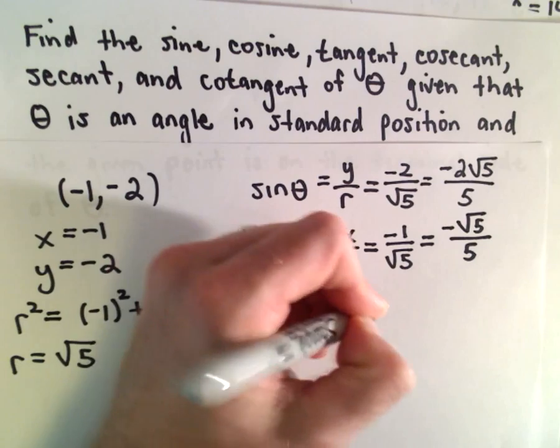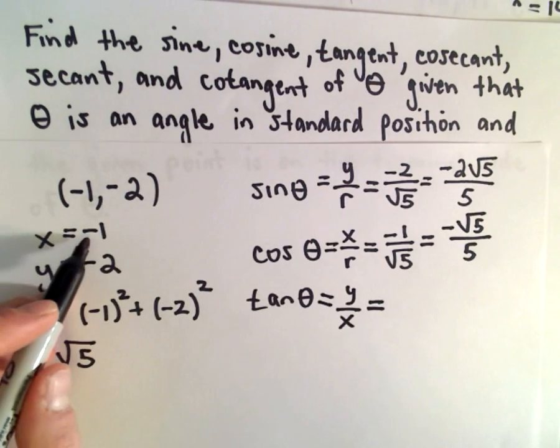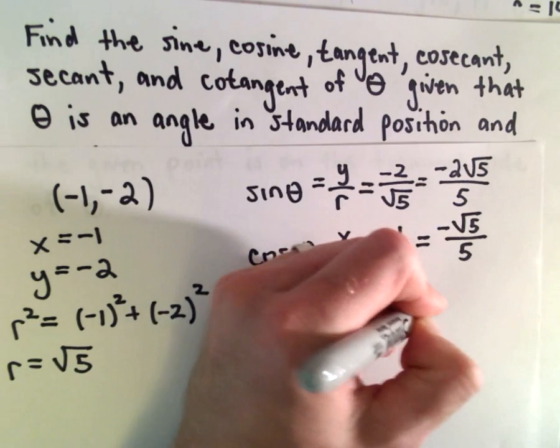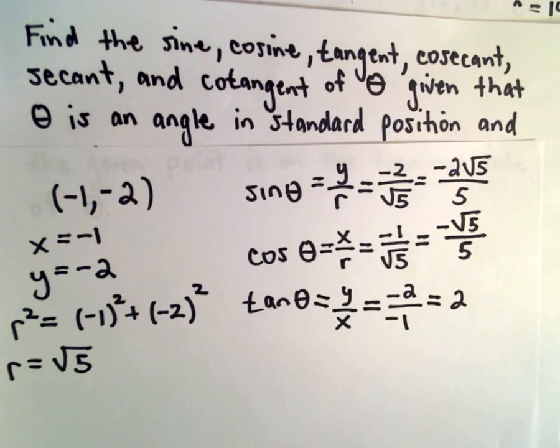Tangent is y divided by x. The y value was negative 2, the x value is negative 1. So that will leave us with positive 2.